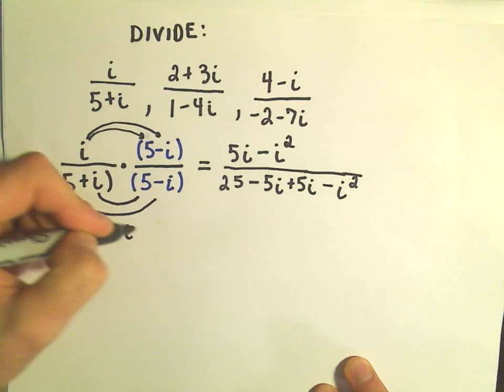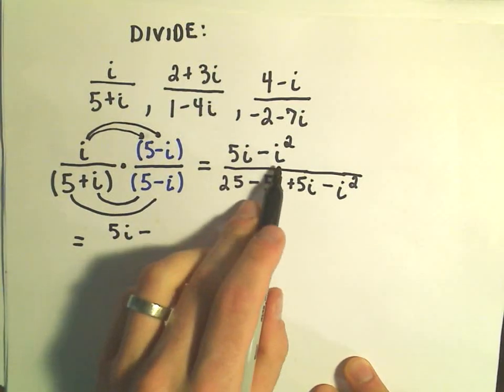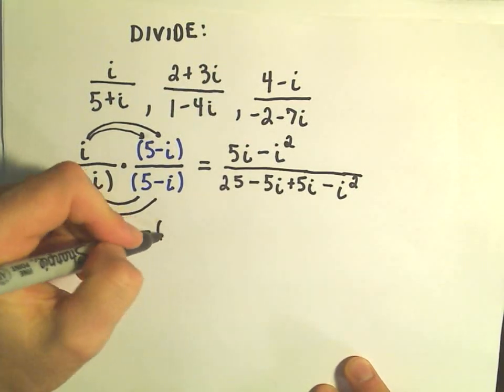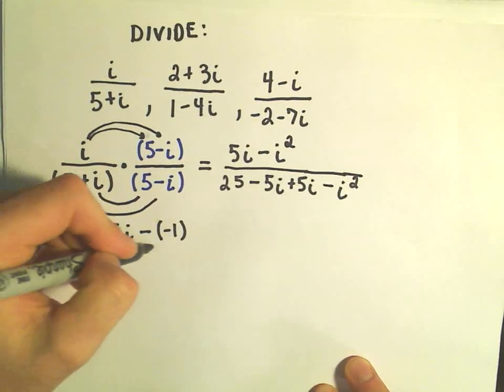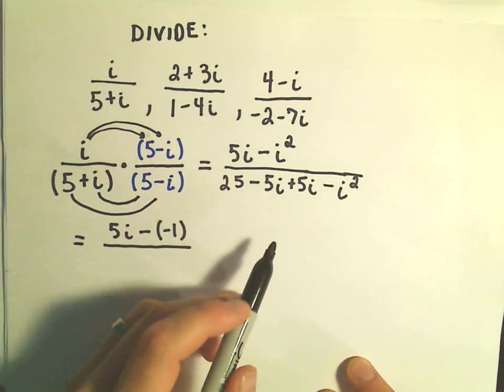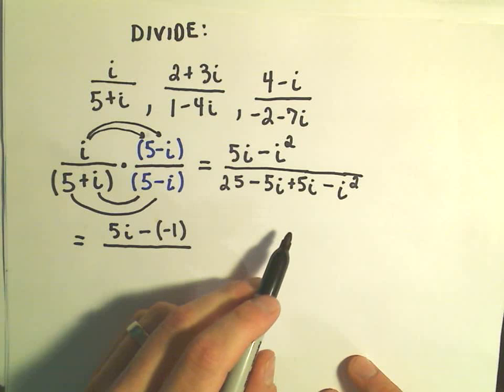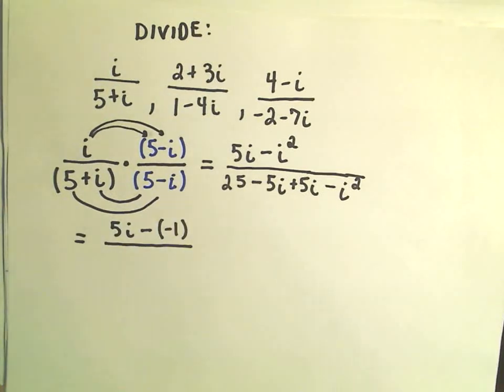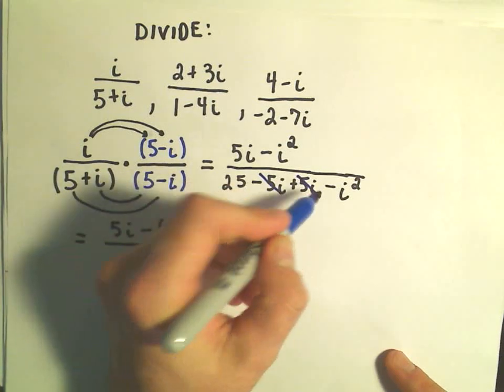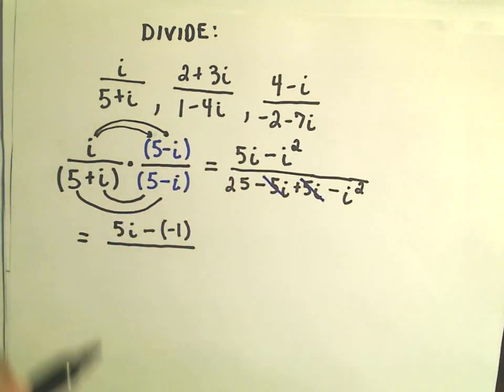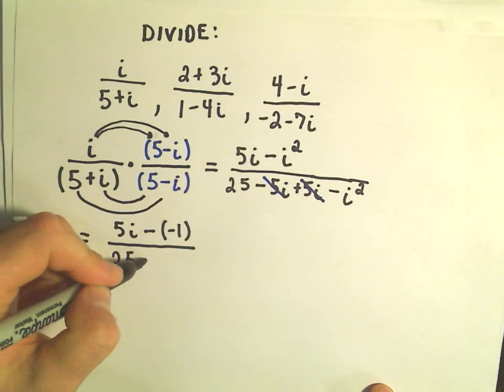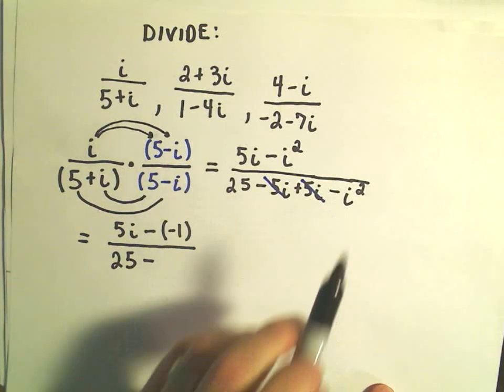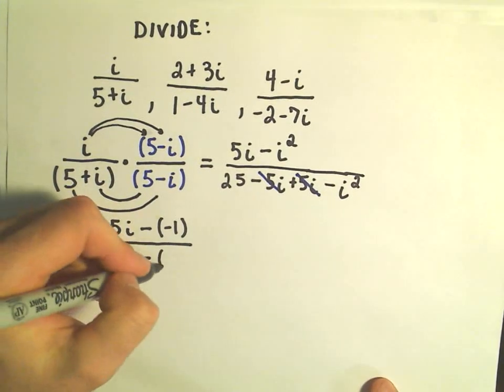So in the numerator, we have 5i minus - but remember, i squared, that can be replaced with negative 1. And then in the denominator, this is kind of the point of multiplying by the conjugate. Notice the negative 5i and the positive 5i are just going to cancel out. So that leaves us with 25 minus our i squared, but again, I'm going to rewrite that as negative 1.